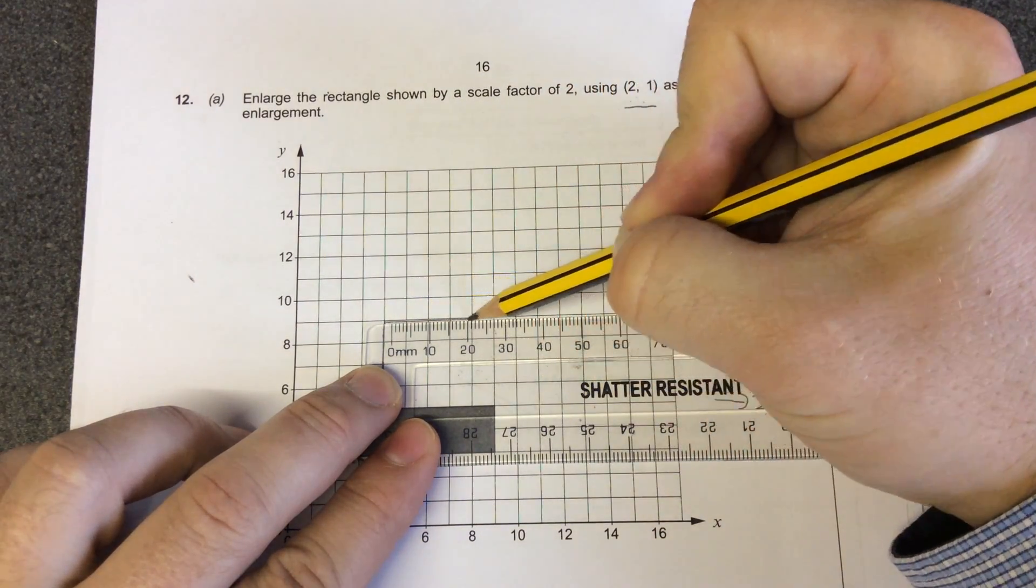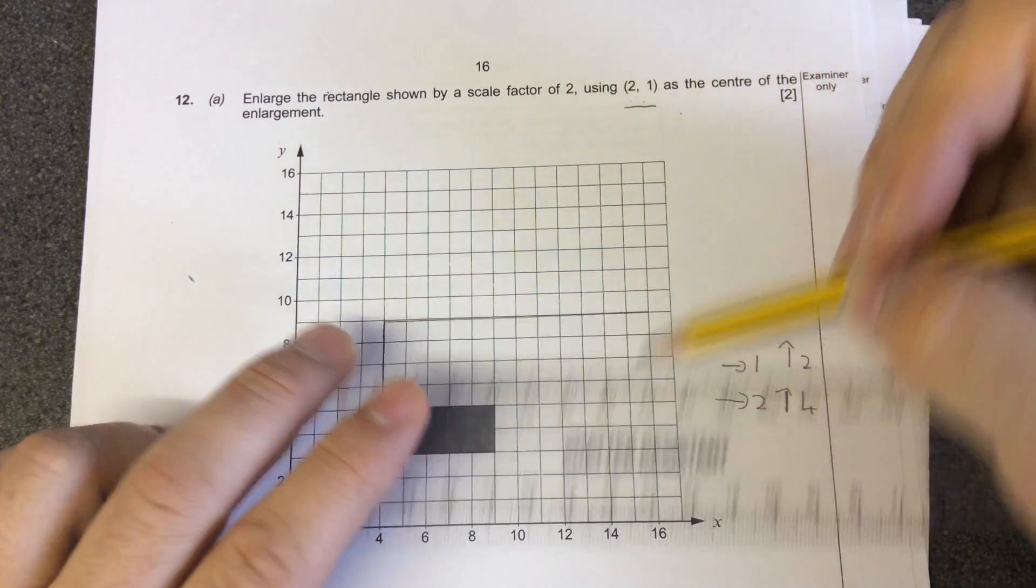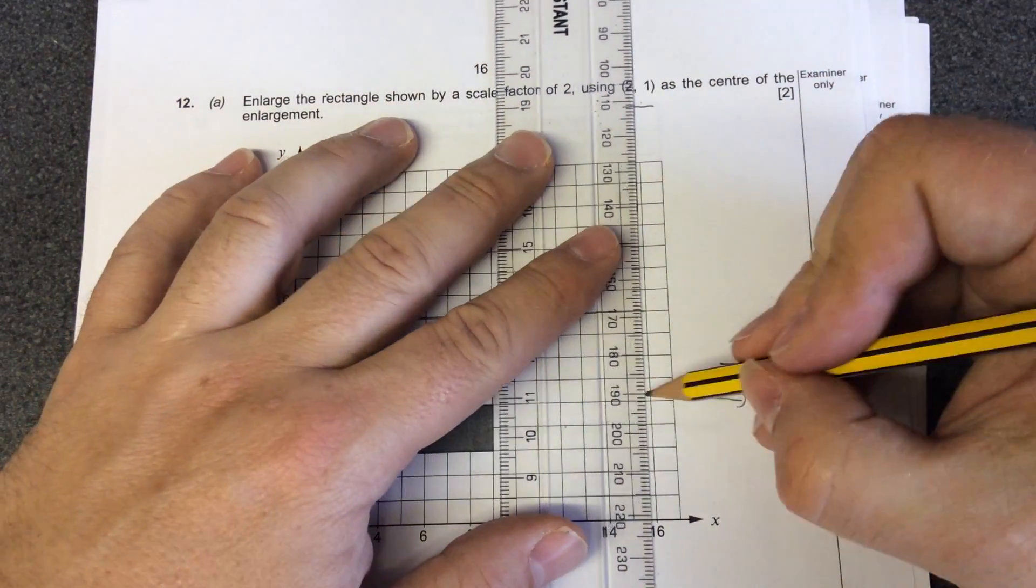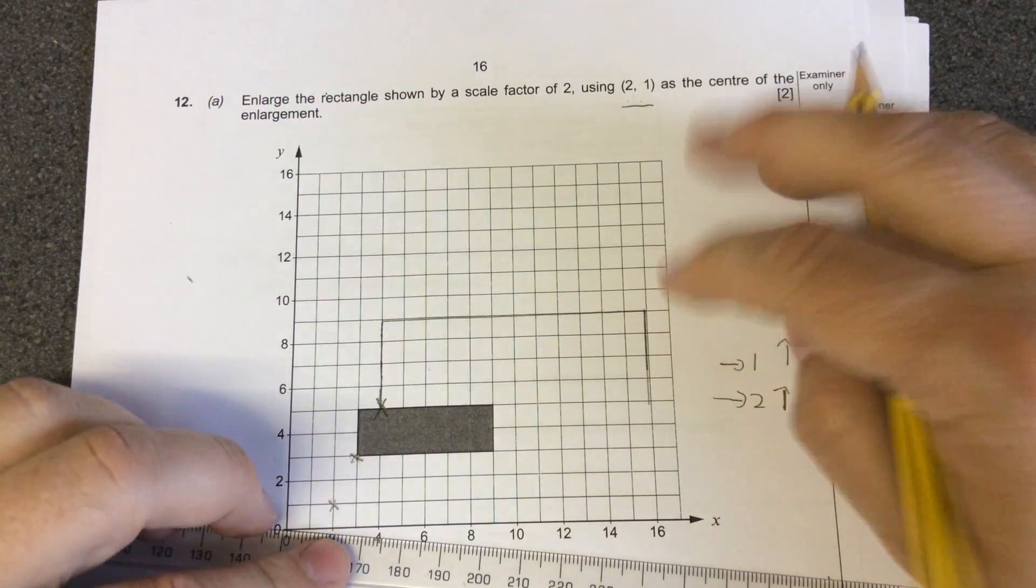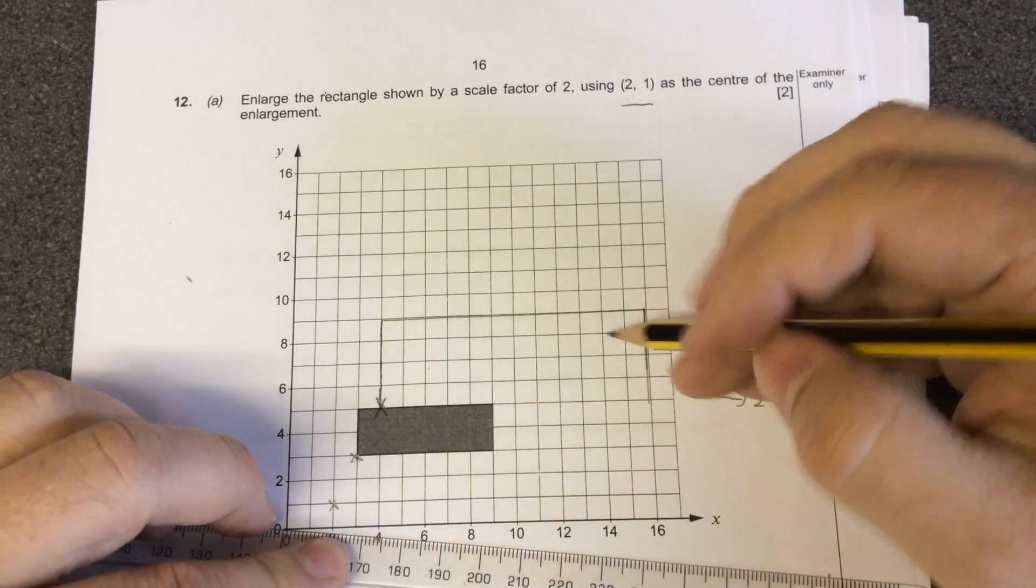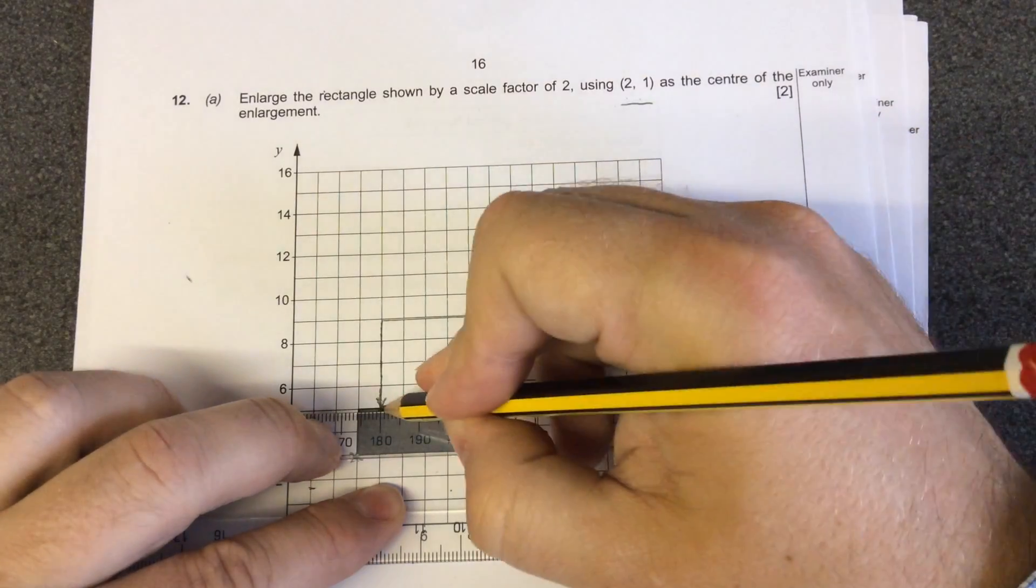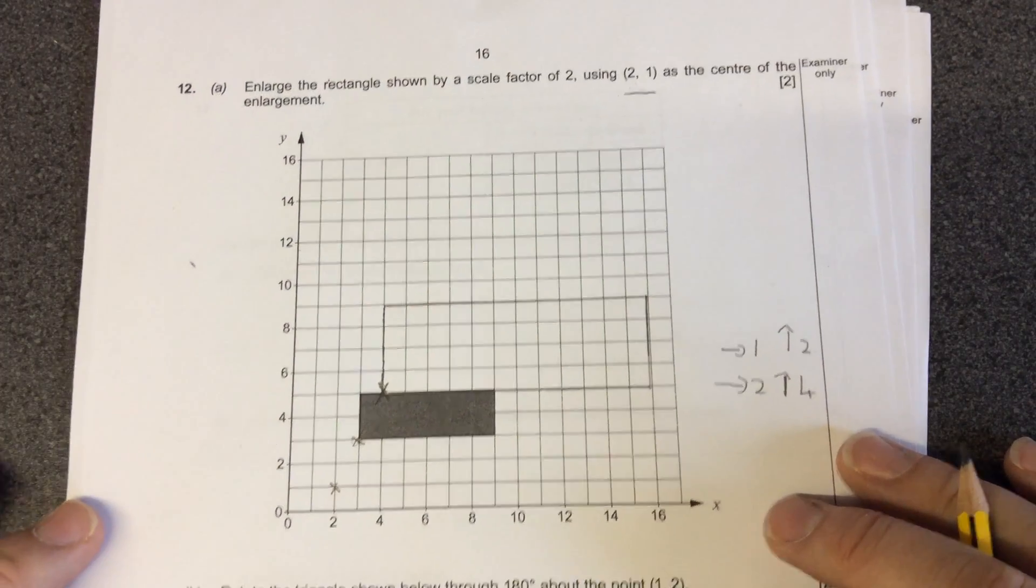So 1, 2, 3, 4, 5, 6, 7, 8, 9, 10, 11, 12. Instead of coming down 2 squares, you now come down 4 squares. So you're coming down 4 squares. And we're at this point, and then you come back 6. You come back, double 6 is 12. So you come back, and that shape is twice as big as the original shape.